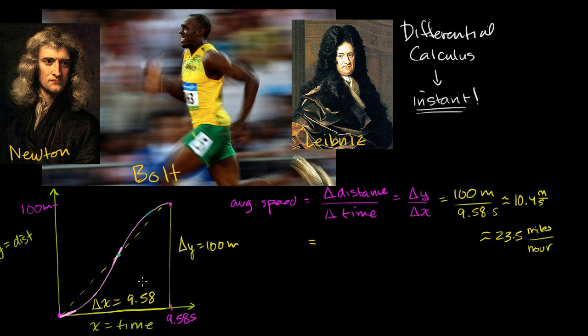But you see, it's not a trivial thing to do. You could try to approximate the slope right over here by taking some change in x and figuring out what the change in y is around it — but that would just be an approximation, because the slope of this curve is constantly changing. So what you want to do is see what happens as your change in x gets smaller and smaller and smaller — you're going to get a better and better approximation.